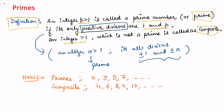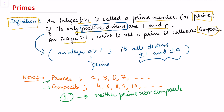Notice that 1 does not appear in the prime list, and 1 also does not appear in the composite numbers list. 1 is neither prime nor composite. Composite numbers are those which have a proper divisor, while prime numbers are those whose only divisor is the number itself. Now let's look at the first theorem based on prime numbers.